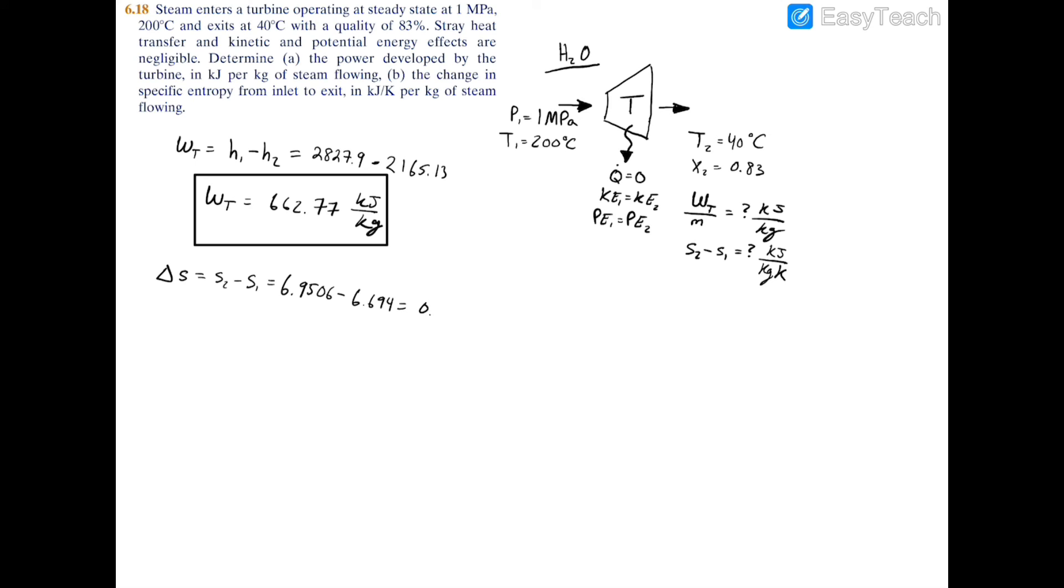Now if you just subtract and put it in your calculator, you'll have that equals 0.2566 kilojoules per kilogram kelvin.